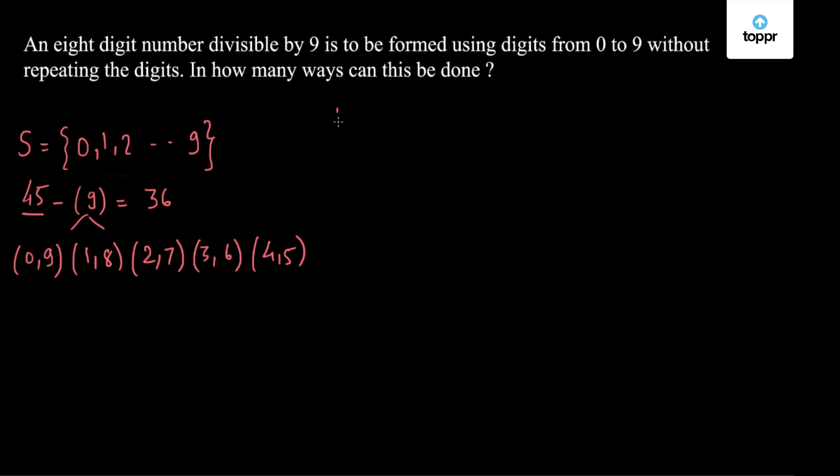So for case 1 of (0,9), the rest of the 8 digits can be rearranged in 8 factorial forms. So this is one possibility.